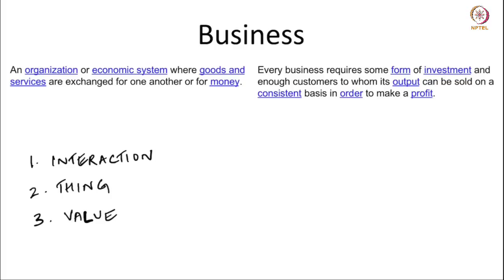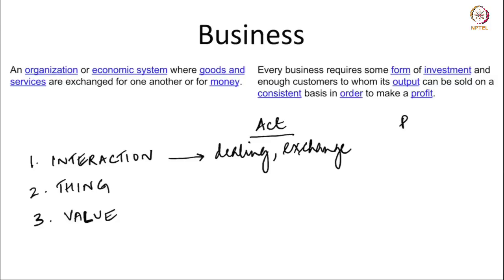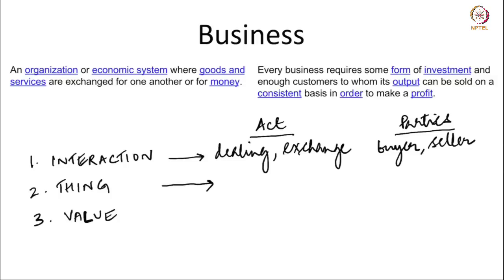There is an interaction; interaction can have multiple connotations — it can be a dealing, it can be an exchange, and it also means there are parties who perform the act. So an act requires at least two people to deal with each other. The parties here could be the buyer or the seller, or the lessee or lessor. The thing here in business refers to a good or a service.